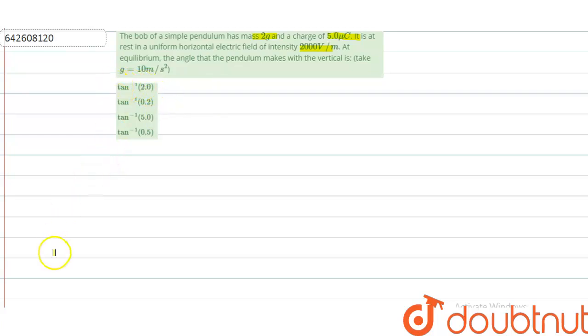We have given four options. Let's see what we will do. Suppose this is our horizontal part where the bob is attached. Simple pendulum is now - suppose this is our simple pendulum and it will be in this form when there is no electricity.